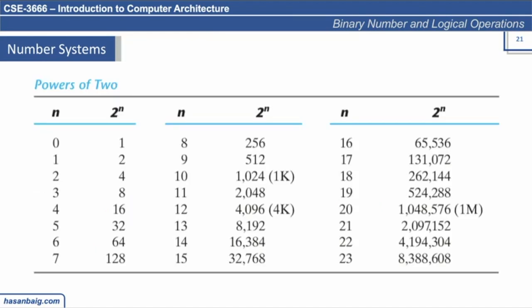You will gradually memorize the powers of two: 1, 2, 4, 8, 16, 32, 64, all the way up to 1024, which corresponds to one kilo. You may have seen file sizes on your computer — for example, an image of one kilobyte. A group of eight bits is referred to as one byte. In digital systems, kilo does not mean one thousand; it means 1024. Similarly, one kilo times one kilo equals one mega.